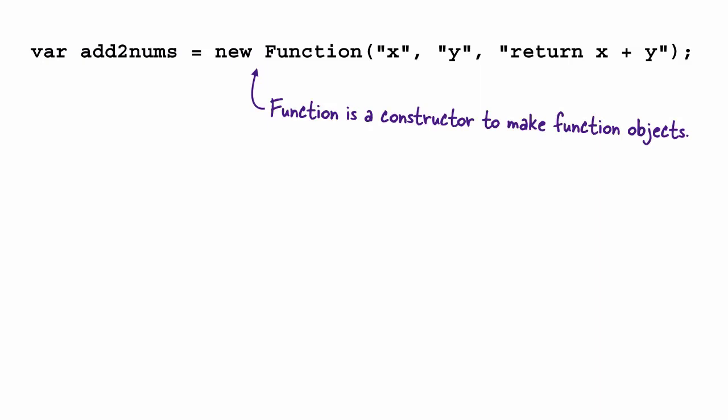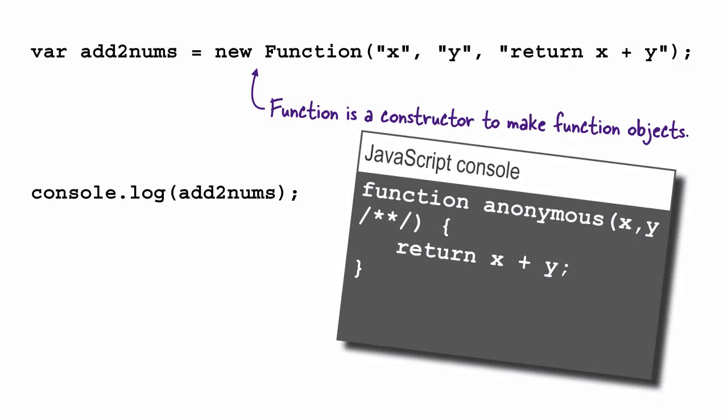While the third becomes the body of the function. When we display the value of AddToNums, we see that we have indeed created a function with two parameters that returns the sum of those two parameters. It looks a little odd in the console, but we can use it just like any other function.